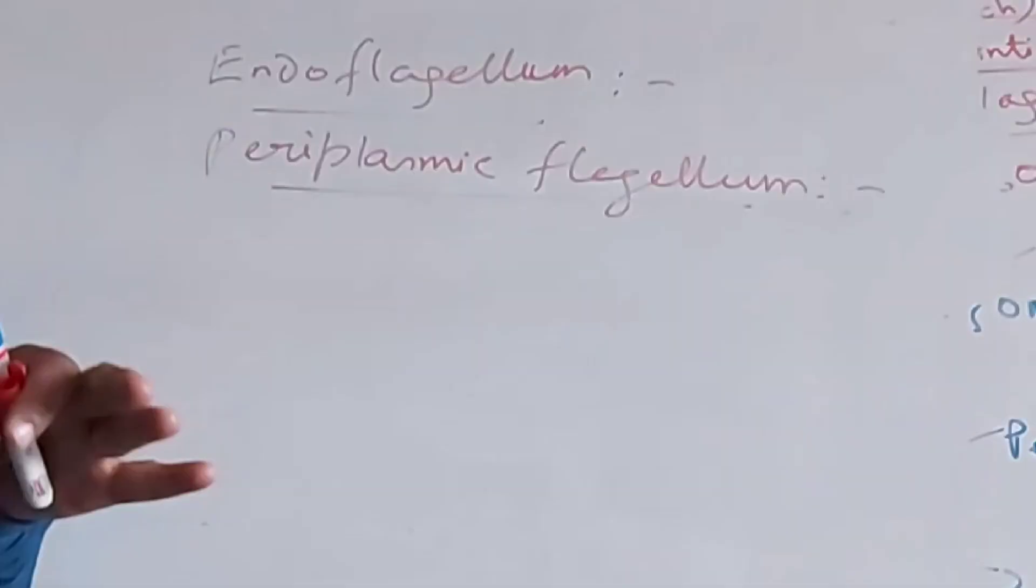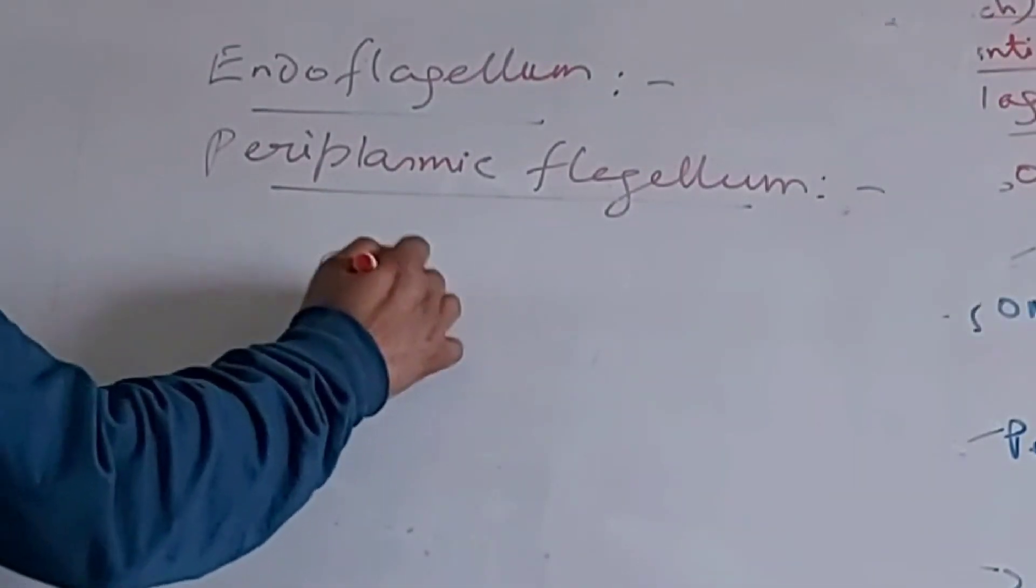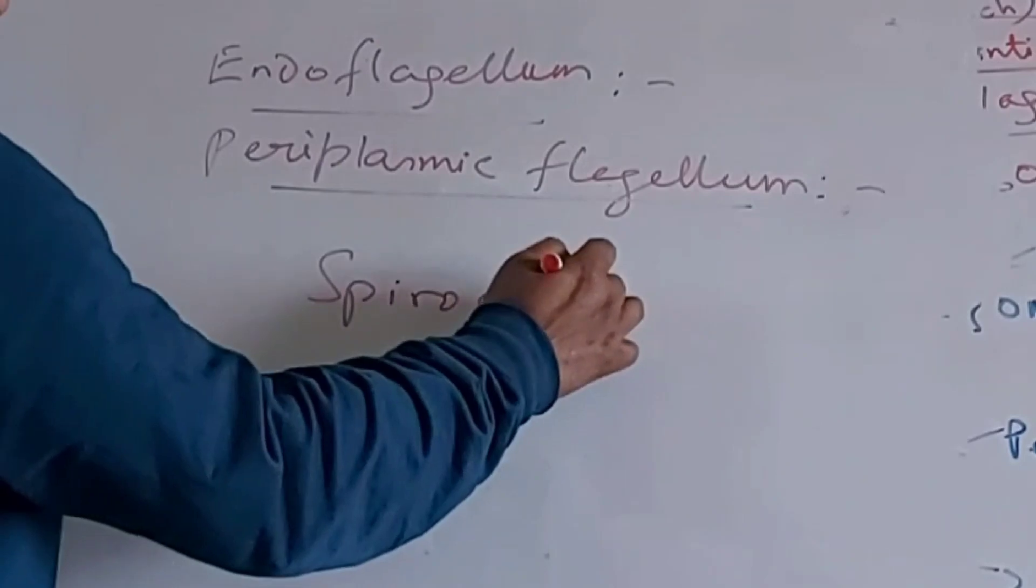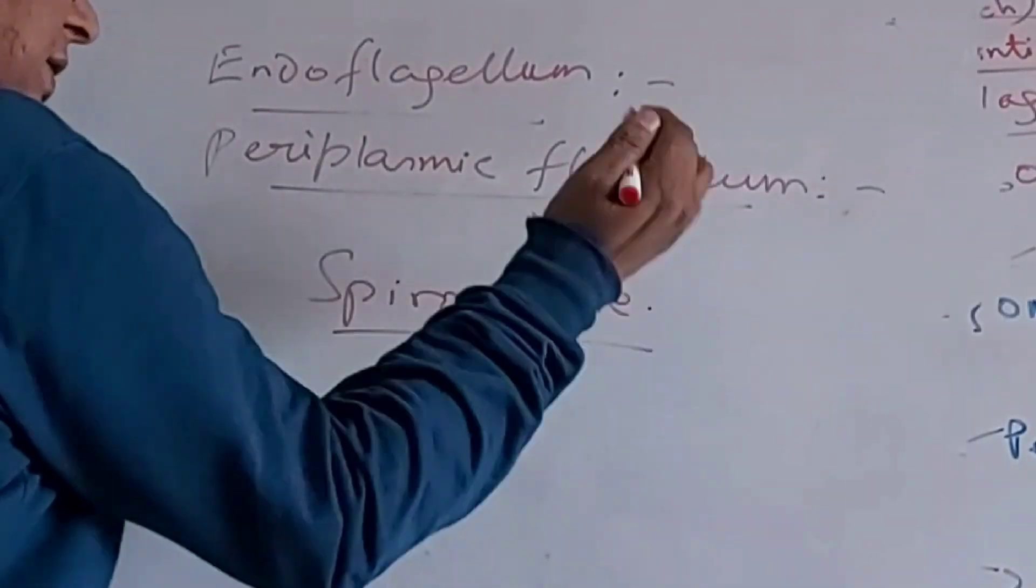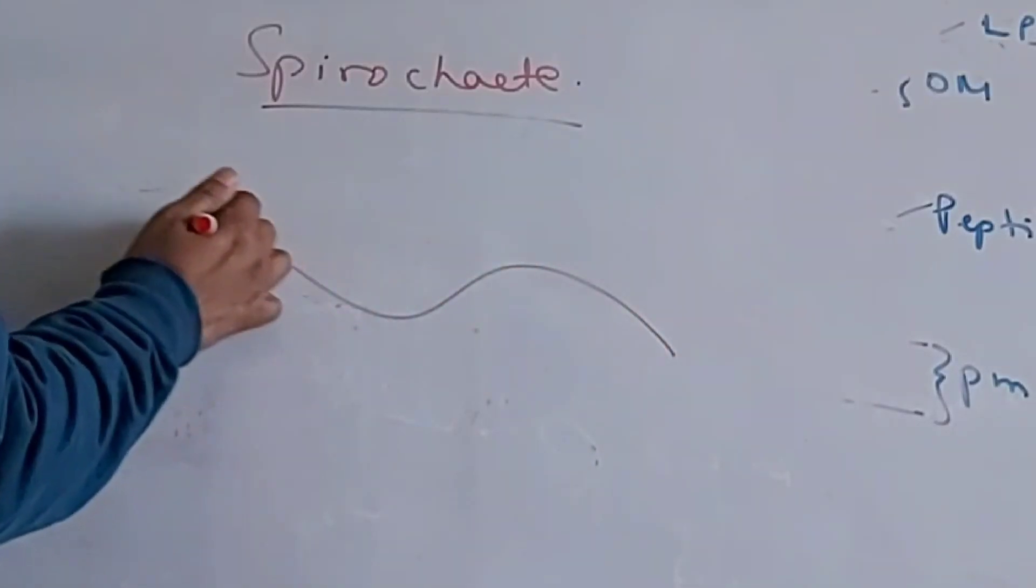in some spiral bacteria like the spirochete. Spirochete, they are spiral bacteria like this.